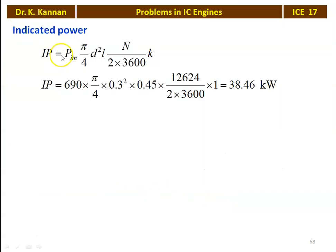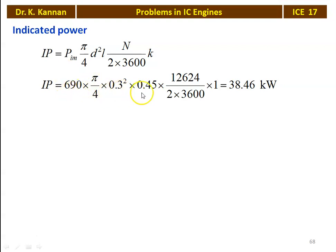We calculate the indicated power: IP = P_IM × (π/4) × D² × L × N/(2 × 3600) × K, where N is in revolutions per hour. Substituting: 690 kilo Pascal (6.9 bar) × (π/4) × 0.3² × 0.45 × 12,624/(2 × 3600) × 1 = 38.46 kilowatts.